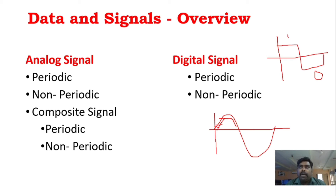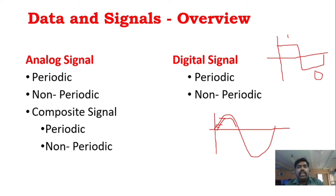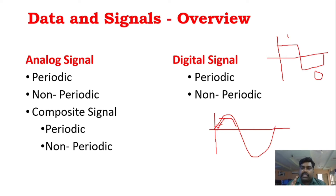To convert an analog signal into a digital signal, you will have to perform sampling and then quantization. As an electronics and communication engineer, you have to know how an analog signal is converted into a digital signal. I will just briefly explain about the analog signal.